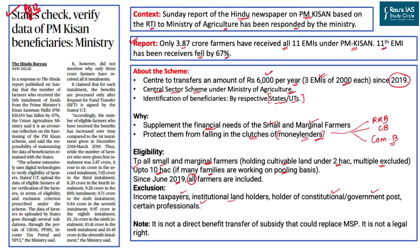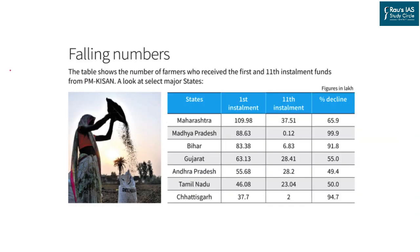It is important to understand that PM Kisan is not a direct benefit transfer scheme of subsidy. The 6,000 rupees received is not a subsidy on fertilizer or fuel — it is direct money transfer from government to farmer, and it is up to the farmer whether to spend it on agriculture investment or otherwise. Secondly, it is not a legal right — no farmer can approach a court claiming they haven't received the 6,000 rupees per year. This article was published on Sunday and repeated today, which is why it is covered in detail.